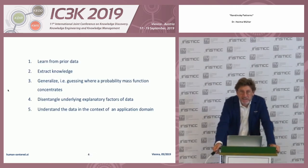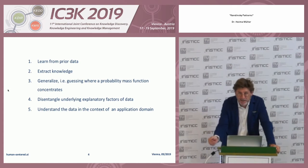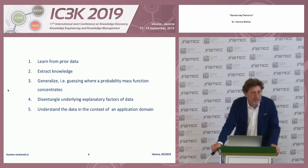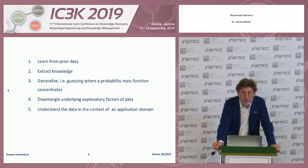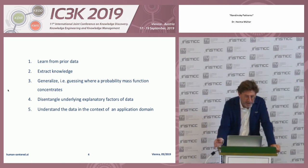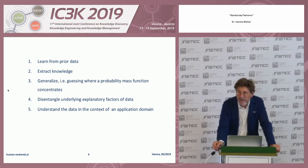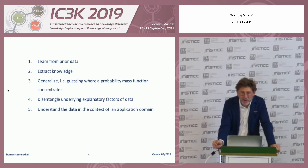But what are the steps necessary to reach a level of usable intelligence? We have to learn from prior data. We have to extract knowledge. And this is valid for humans and algorithms. We have to generalize — algorithms have to guess where the probability mass function concentrates; we humans do it in another way. Then points four and five are also very important: we have to disentangle the underlying explanatory factors of data, and we have to understand the data in the context of the application domain.